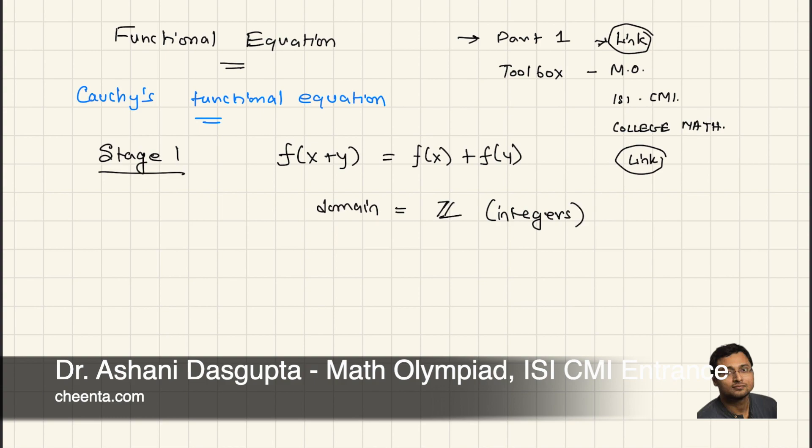Positive integers, negative integers, zero. The co-domain is equal to R, which is the real numbers, the set of real numbers.